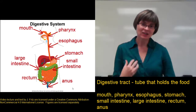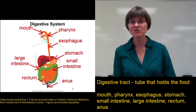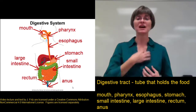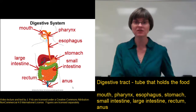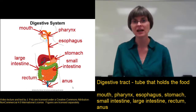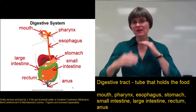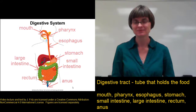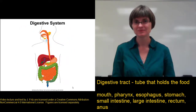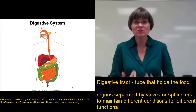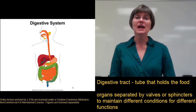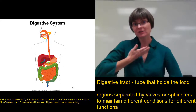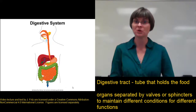The different sections of our digestive system are separated from each other by a series of valves or sphincters. So the esophagus is separate from the stomach, which is separate from the small intestine, which is separate from the large intestine. The different areas of the digestive tract are specialized for different functions, and because of that they need to maintain different conditions, so we separate the different segments because those conditions don't always work well together.